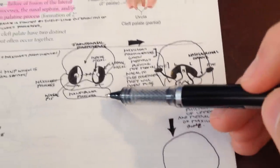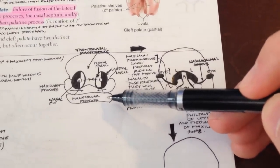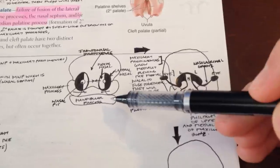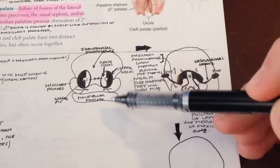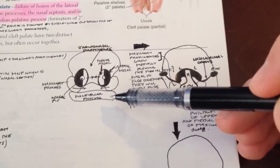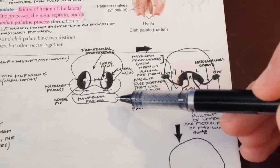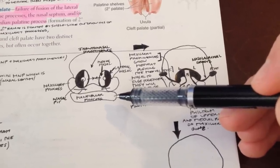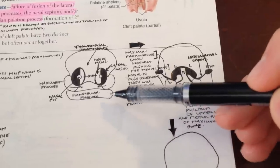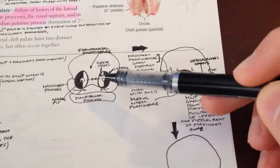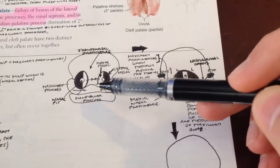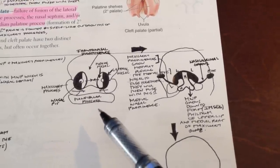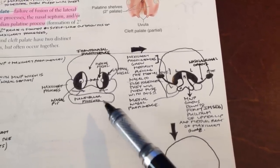Regarding the mandibular processes — not necessarily the most relevant here, but just in case it's a multiple choice answer: the mandibular prominence or process has nothing to do with cleft lip and cleft palate. It goes on to form the lower lip, the lower jaw, and the lower part of the cheeks.